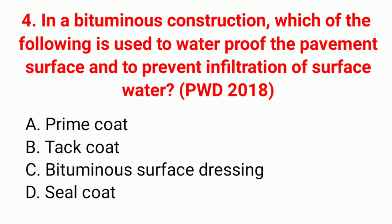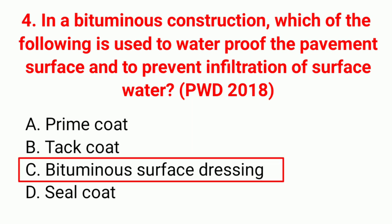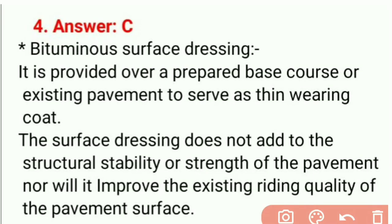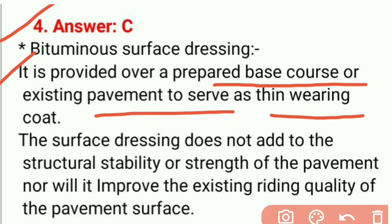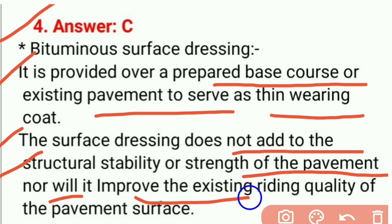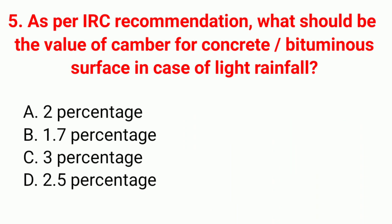Question 4: In bituminous construction, which is used to waterproof the pavement surface and prevent infiltration of surface water? Correct answer option C: bituminous surface dressing. It is provided over a prepared base course or existing pavement to serve as a thin wearing coat. Surface dressing does not add to the structural stability or strength of pavement, nor will it improve the existing riding quality.